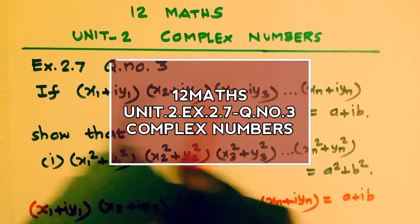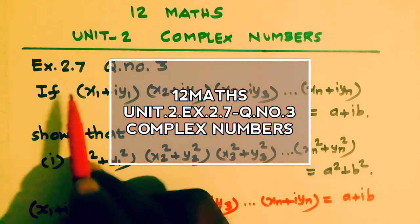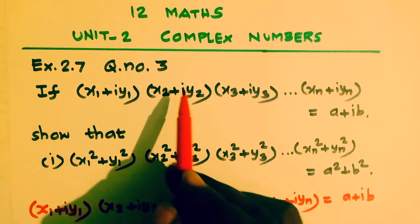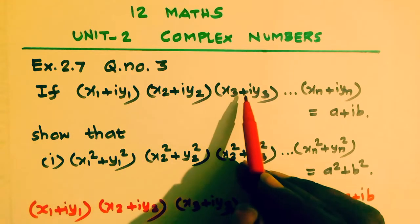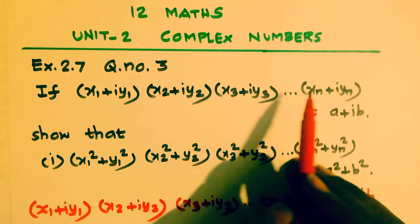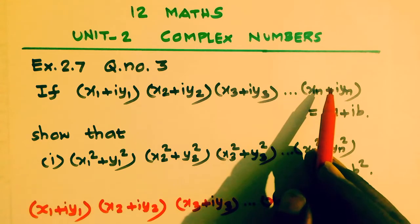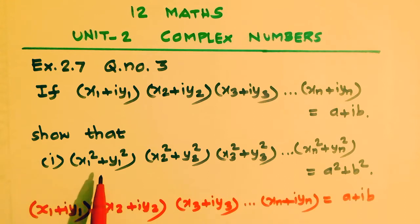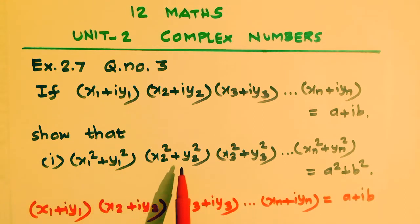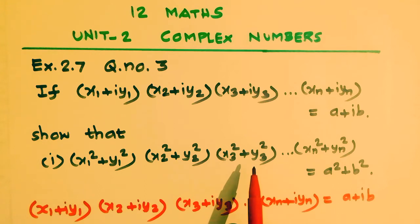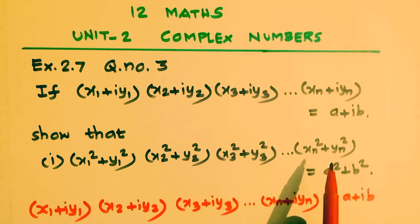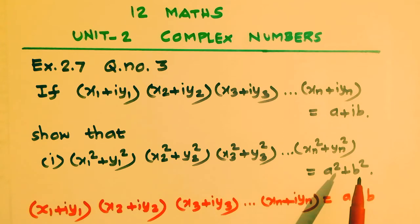12th standard, Unit 2, Complex Numbers, Exercise 2.7, Question number 3. If (x1 + iy1)(x2 + iy2)(x3 + iy3)... (xn + iyn) = a + ib, show that subdivision 1: (x1² + y1²)(x2² + y2²)(x3² + y3²)...(xn² + yn²) = a² + b².